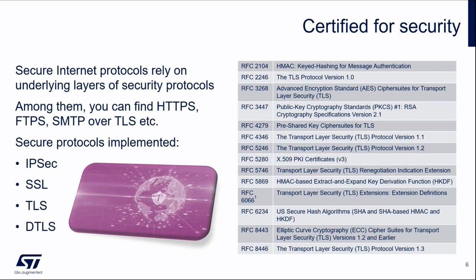With TLS 1.3, more security features are added — more elliptic curves — and it also stops old protocols like CBC, RC4, SHA-1, and MD5 that are no longer considered strong against potential attacks. Also highlighted is RFC 5280, supporting certificates in PEM format, both in ASCII and binary.